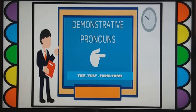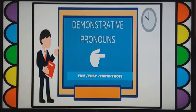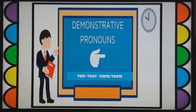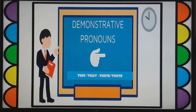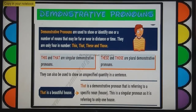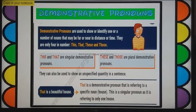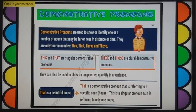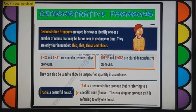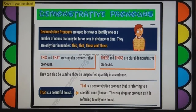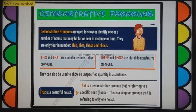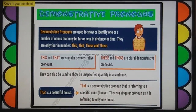Demonstrative Pronouns: this, that, these, those. This is about demonstrative pronouns — singular and plural. What is a demonstrative pronoun? They are used to show or identify one or a number of nouns that may be far or near in distance or time. They are only four in number.